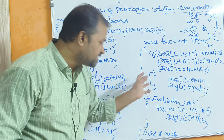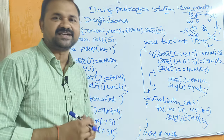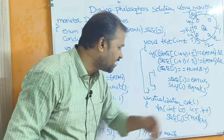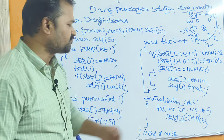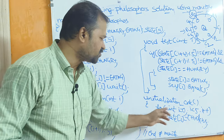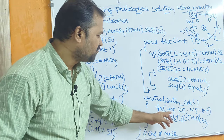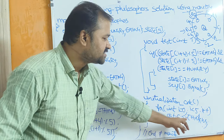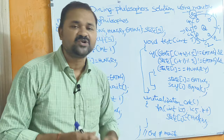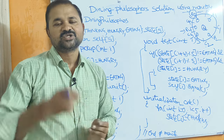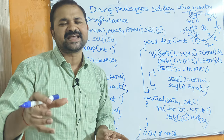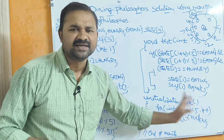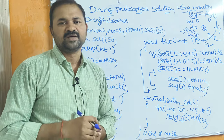In the initialization_code procedure: for(int i = 0; i < 5; i++), state[i] = thinking. So initially, the state of all the philosophers is thinking.